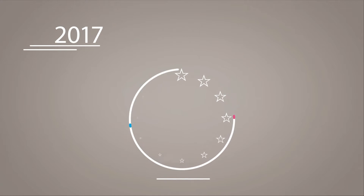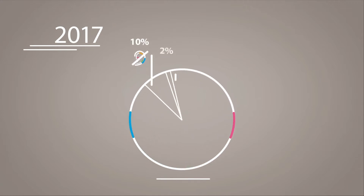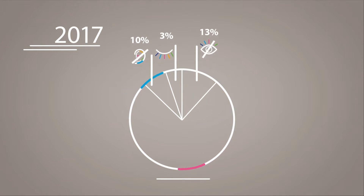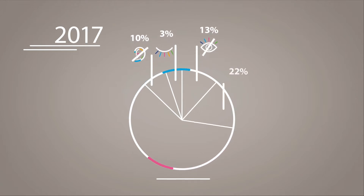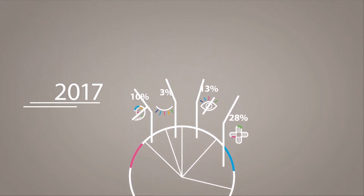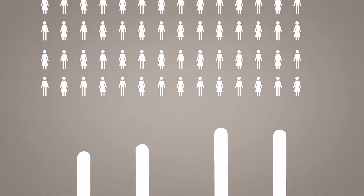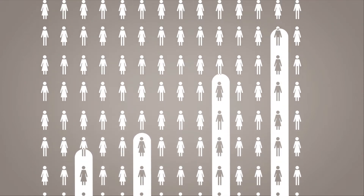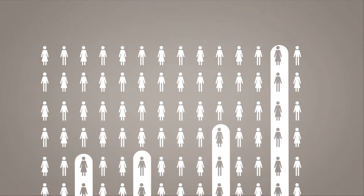Accessibility. In 2017, 10% of people within the EU had hearing problems, 3% had sight loss, 13% were partially sighted persons, and 28% reported long-standing health problems. Since the proportion of people with disabilities increases with age, many of us will experience such issues ourselves in the future.